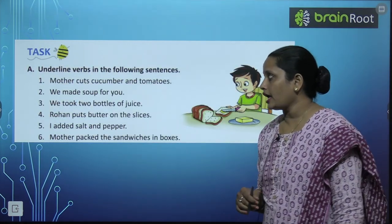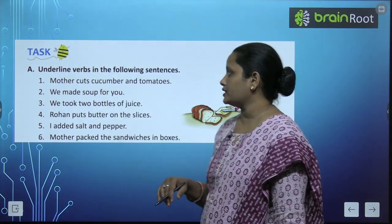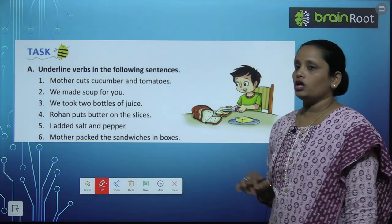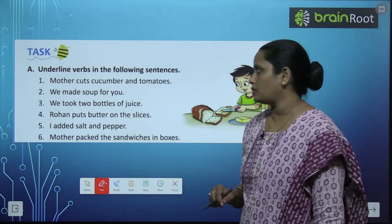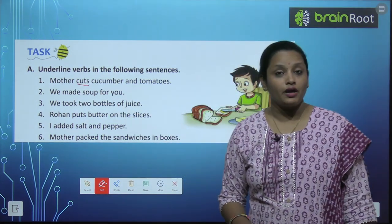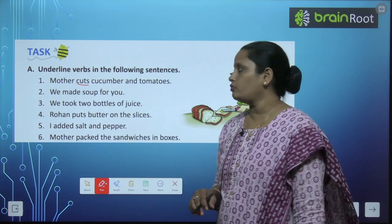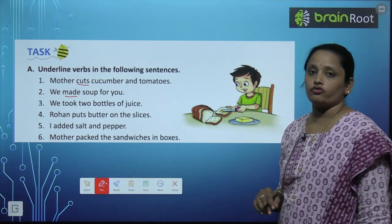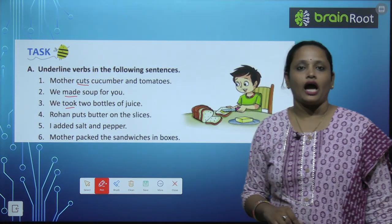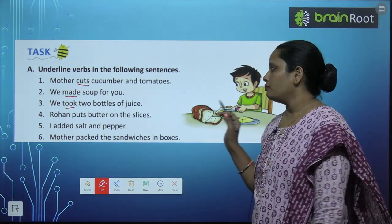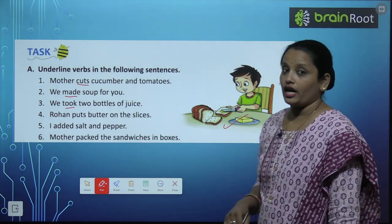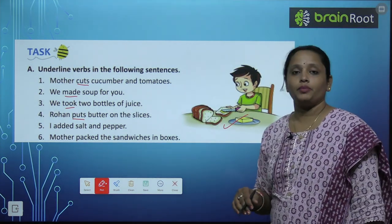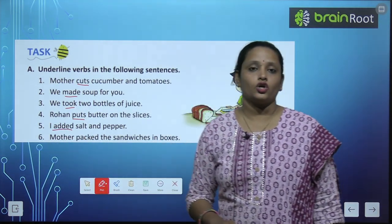Now let's do this exercise: underline the verbs in the following sentences. First sentence — Mother cuts cucumber and tomatoes. Mother ne kya kiya? Cucumber and tomatoes ko cut kiya. So cut karna ek kaam hai. We made soup for you — hum ne kya banaya? Soup banaya. We took two bottles of juice — yahaan pe took action word aayega. Rohan puts butter on the slices — Rohan ne butter lagaya. I added salt and pepper — maine salt and pepper add kiya.